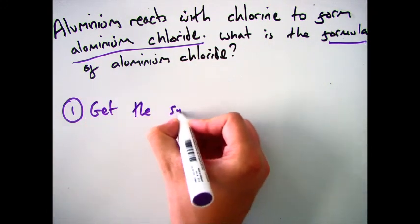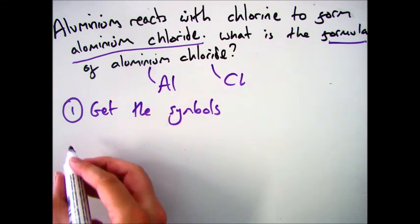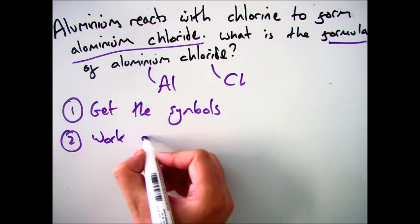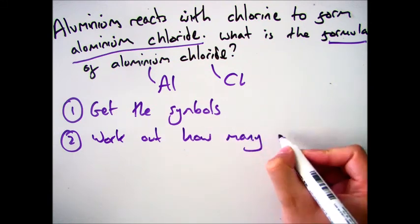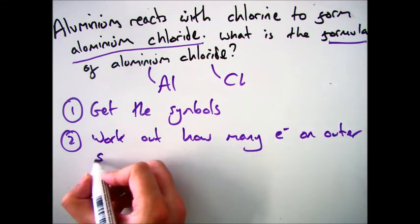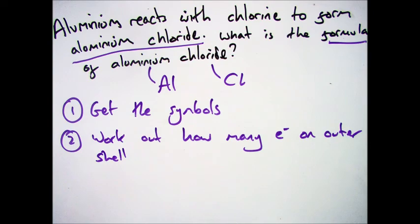To be able to answer this question, the first thing you need is the symbols of the elements involved, aluminum and chlorine, Al and Cl. Number two, how many electrons do they have in the outer shell? Look on your periodic table, what group are they in? Aluminum is in group 3 and chlorine is in group 7.